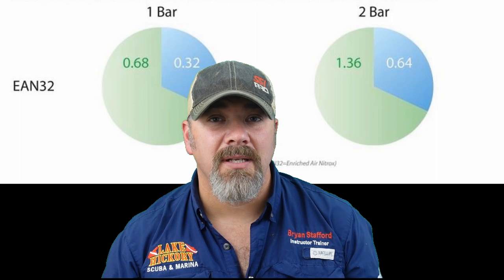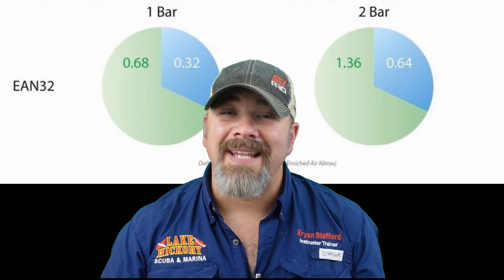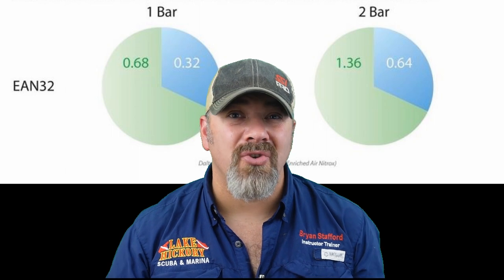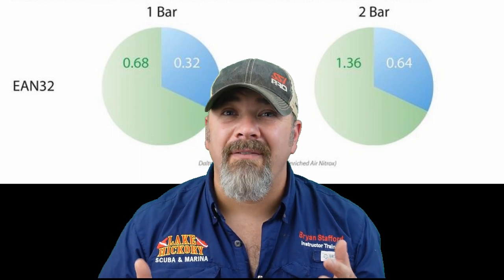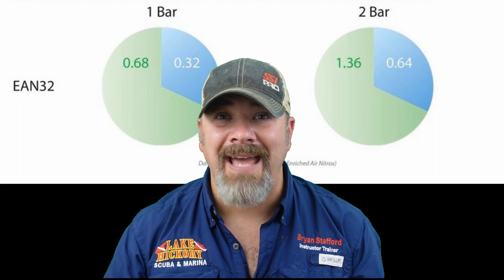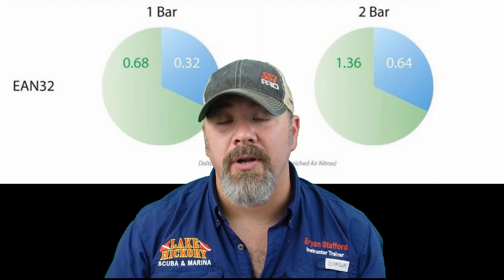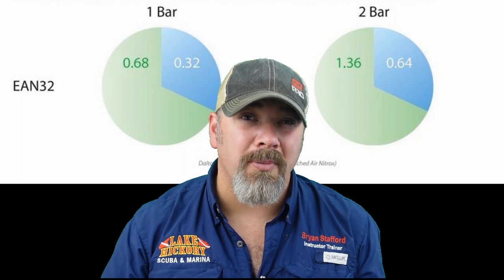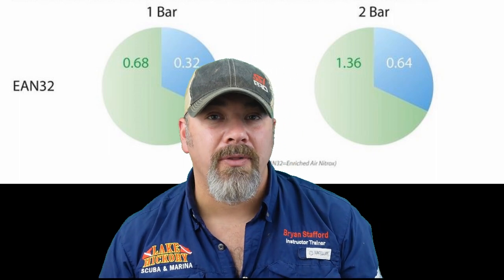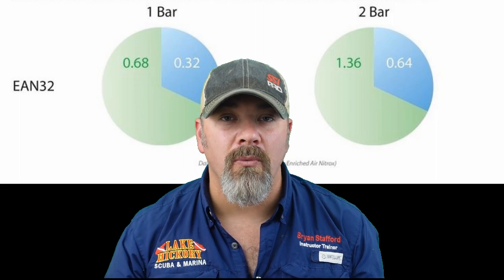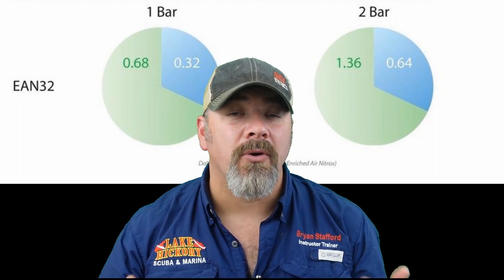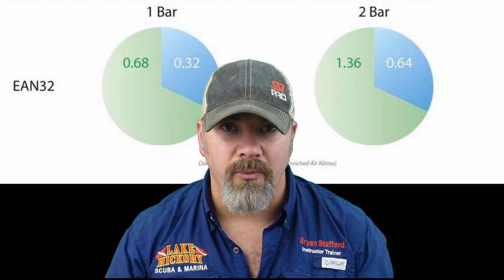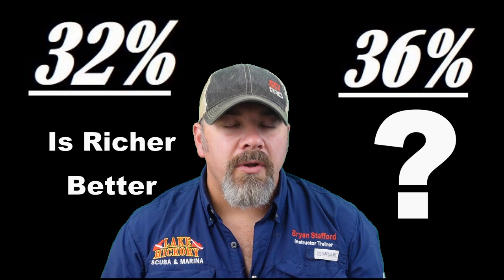Now that we understand what partial pressure is, we need to understand how it changes as we descend into the water column. As we increase atmospheric pressure, the effect of that gas goes up and so does the partial pressure. For example, at 32% oxygen at the surface, when you get to 33 feet — which is two atmospheres — you're basically breathing 64% at that depth. Every time we increase atmospheric pressure by one, we are doubling, tripling, or quadrupling the partial pressure based on whatever atmospheric pressure we're at.